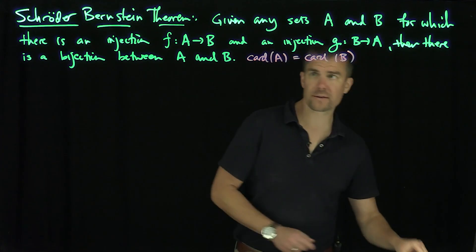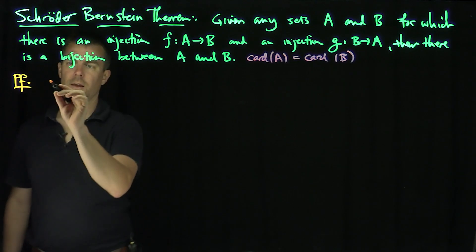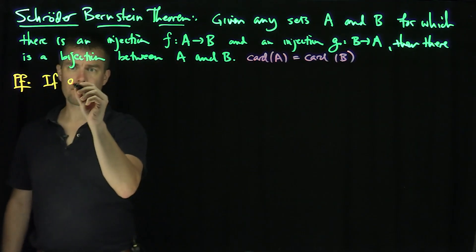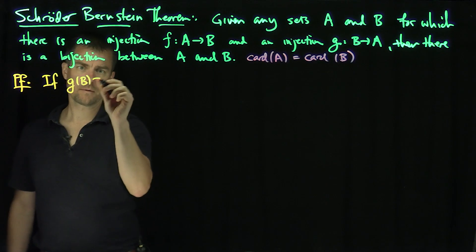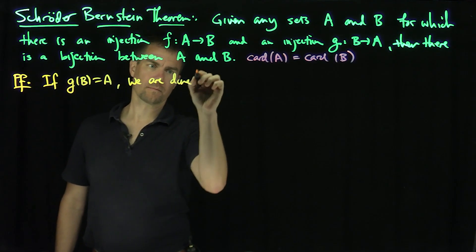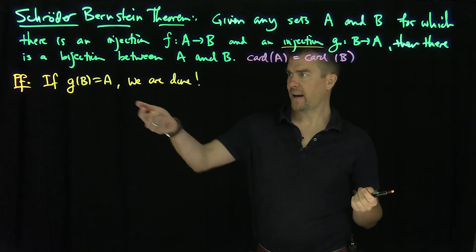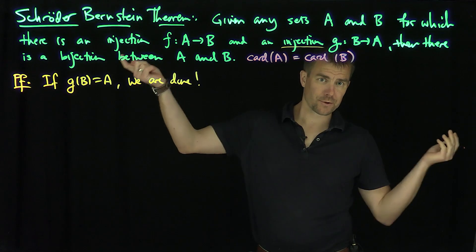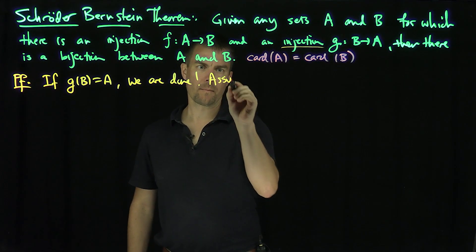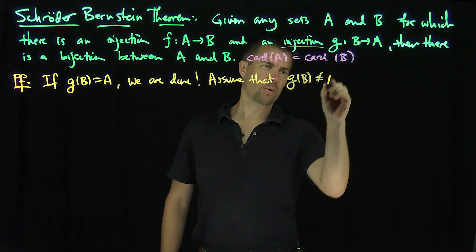So what's the idea? The proof goes as follows. If G of B is equal to A, we're done. Why? Because G, by assumption, is an injection, so it's injective, and it's bijective if G of B equals A, so we have a bijection. So assume otherwise — assume that G of B is not equal to A.